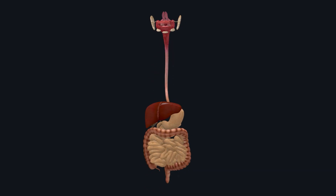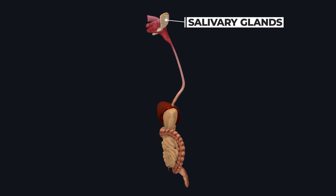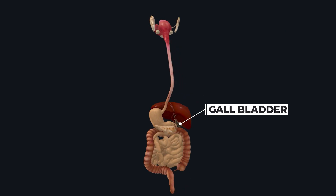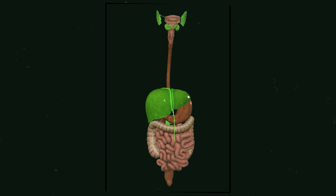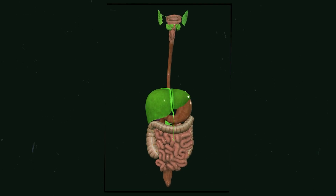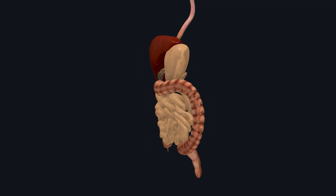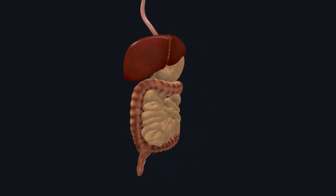The accessory digestive organs include the salivary glands, liver, gallbladder, and pancreas. These organs do not come in direct contact with food, but they play an important role in digestion, which is why they are considered essential parts of the digestive system. Let's now understand the structure and function of each part one by one.